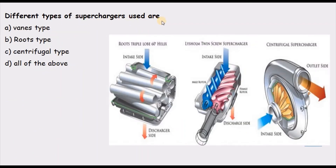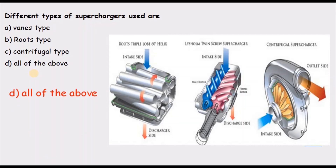Question 6 — different types of superchargers used: anything that can compress air can be used as a supercharger, since the main purpose is to densify the air and supply it to the engine. It can be a roots type blower, a screw type, a vane type blower, or a centrifugal type blower. So the correct answer is D — all of the above.